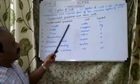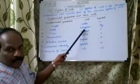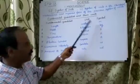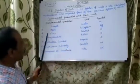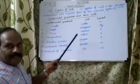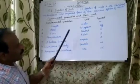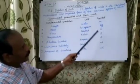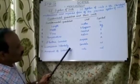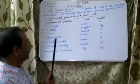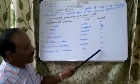The unit of length is meter, denoted by small m. Unit of mass is kilogram, denoted by kg. Unit of time is second, denoted by small s. Unit of temperature is kelvin, denoted by capital K. Unit of electric current is ampere, denoted by capital A. Unit of luminous intensity is candela, denoted by cd. Unit of amount of substance is mole, denoted by mol.